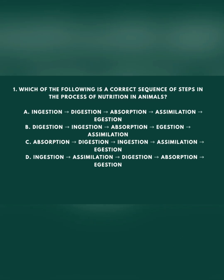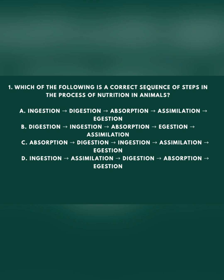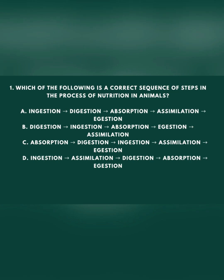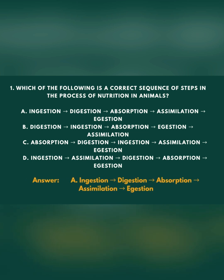Question 1: Which of the following is a correct sequence of steps in the process of nutrition in animals? The answer is A: Ingestion, Digestion, Absorption, Assimilation, Egestion.